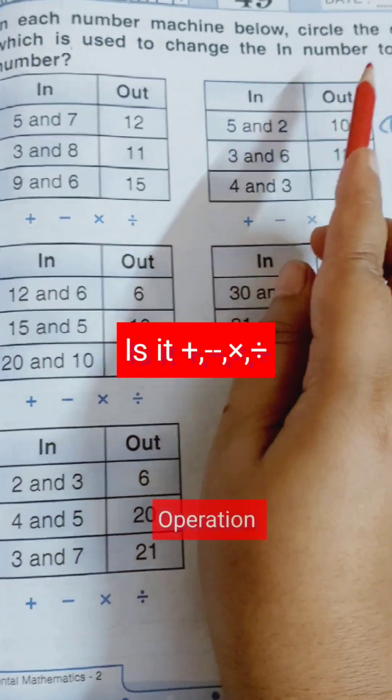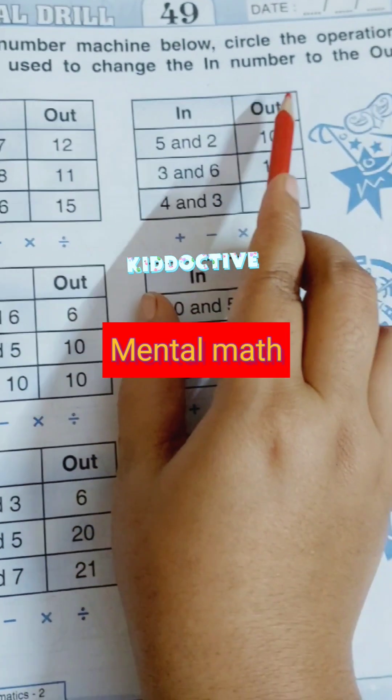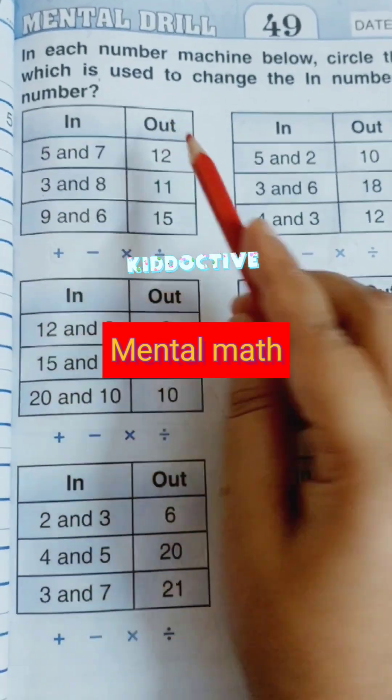In each number machine below, circle the operation which is used to change the in number to the out number.